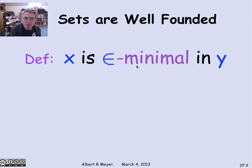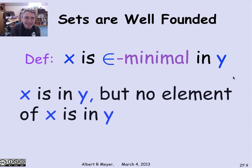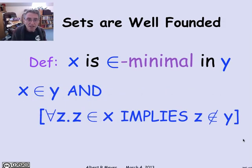Let me say that x is membership minimal, epsilon minimal in y, means that x is a member of y, but there's no element of x that's also in y. In other words, x is built out of things that are not in y, but x itself is in y. So x kind of comes before any of the other elements in y. To say this with a formula, we just say that x is in y, and for every z, if it's in x, then it's not in y. That's the definition that x is membership minimal in y.